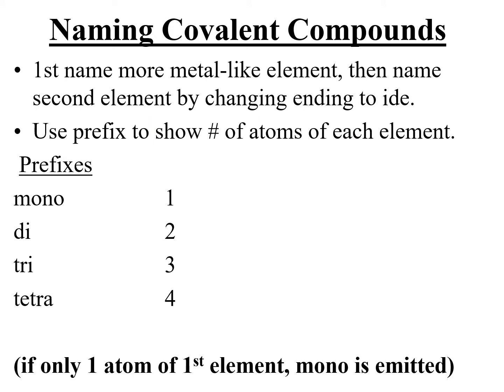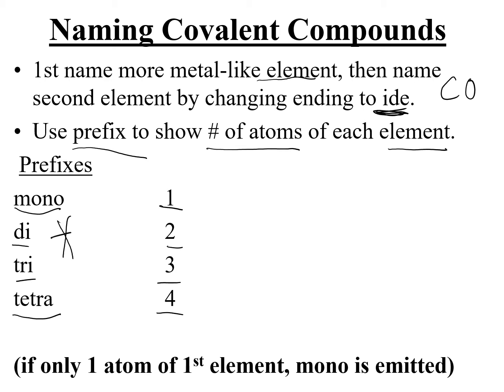To name covalent compounds, you name your two elements. The first one is just the element's name — the more metal-like one, further to the left on the periodic table — but you can name them in the order the formula is given. The second element, change the ending to 'ide.' Use prefixes to show the number of atoms of each element: one atom is mono, two atoms is di, three is tri, and four is tetra.